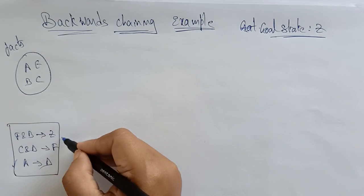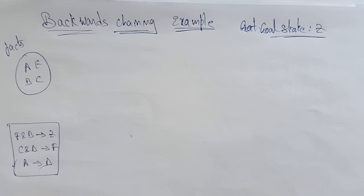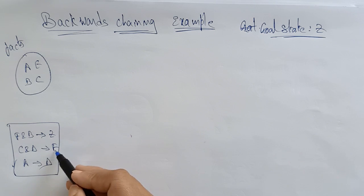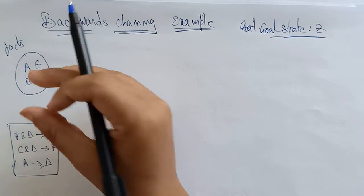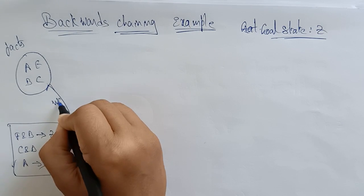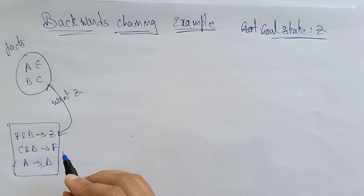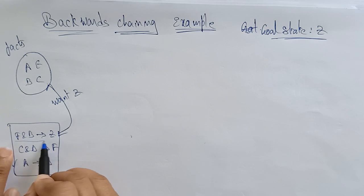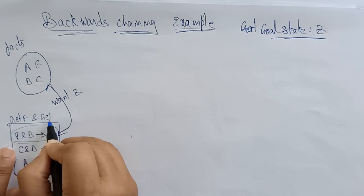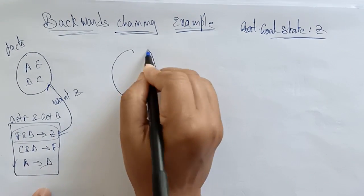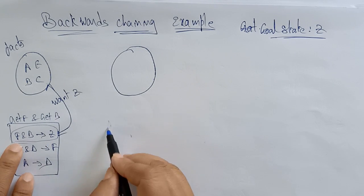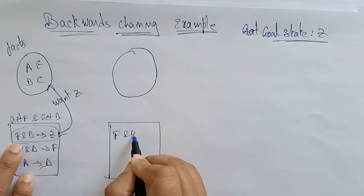This is a backward process. I want Z — the goal state is Z. I check the facts: there is no Z in the facts, but Z is present in the rules. So I need to get F and get B. In forward chaining, whatever is matching in the rules I place the resulting element into facts, but in backward chaining I start with what I want. I want Z, so Z is present in this rule: F and B implies Z. So next I need to get F and B.